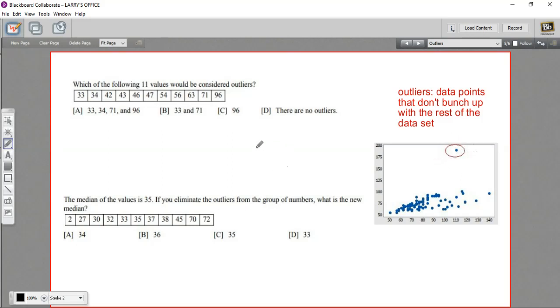So here, we're going to try to identify outliers and analyze some data after we've excluded outliers and see what the changes are. In this first problem, we have this data set right here.